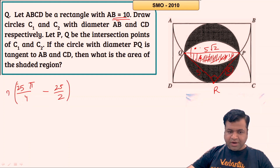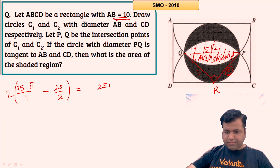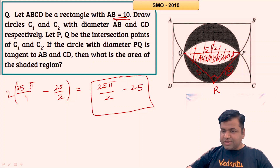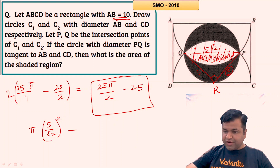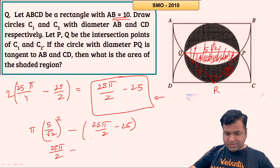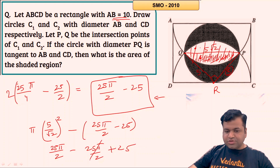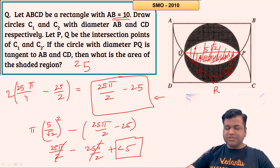Now subtract that white portion from the complete inner circle. The inner circle has diameter PQ = 5√2, so radius = 5/√2, giving area = π × (5/√2)^2 = 25π/2. Subtracting the white portion: 25π/2 − (25π/2 − 25) = 25. The 25π/2 terms cancel, leaving the shaded area = 25 square units.